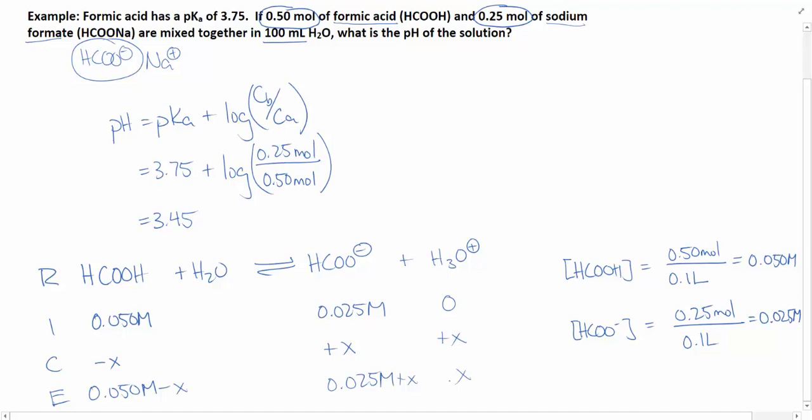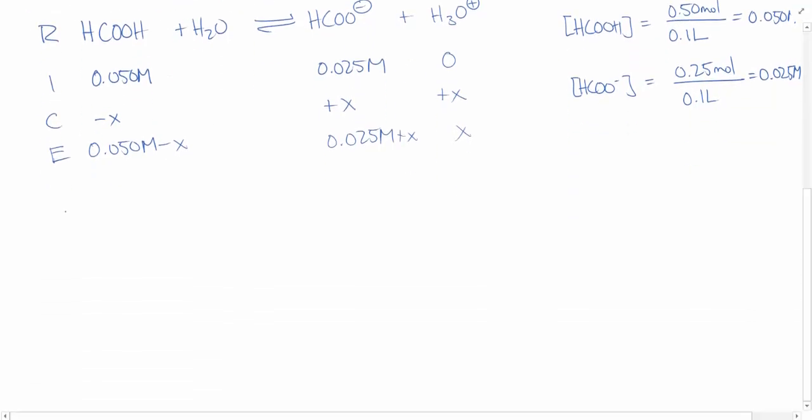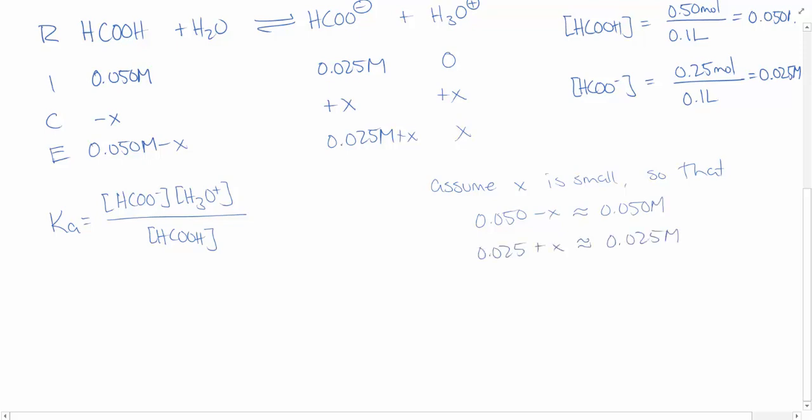So we now need to write out our Ka equation. So we have our Ka is equal to the concentration of our conjugate base multiplied by H3O+ over the concentration of formic acid. I'm going to assume that x is small so that 0.05 minus x is around 0.05, and 0.025 plus x is around 0.025, so they're roughly equivalent because x is so small. Plugging those values into this equation here, we have that the concentration of HCOO- is 0.025 molar, the concentration of H3O+ is x, and the concentration of acid is 0.050 molar.